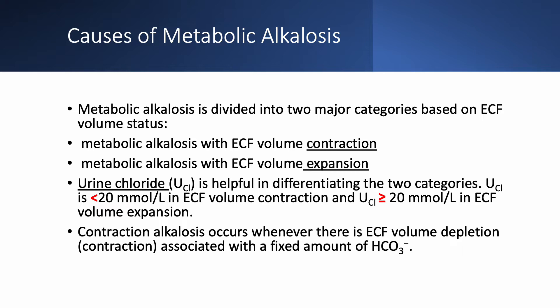Let's discuss the causes of metabolic alkalosis. We have two major categories. By far the most common is metabolic alkalosis with extracellular fluid volume contraction — some people call that contraction alkalosis. Far less common is metabolic alkalosis with extracellular fluid volume expansion. In the first case, the patient is dehydrated; in the second, they are not. Checking urine chloride is very helpful. Urine sodium is not reliable because it can be high even with contraction alkalosis, as the kidneys may excrete sodium with bicarbonate. A spot urine chloride less than 20 mmol/L indicates contraction alkalosis; equal to or above 20 indicates volume expansion.